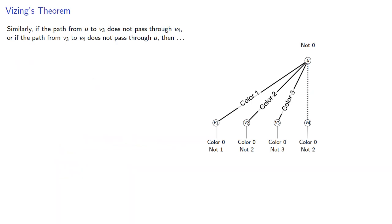Similarly, if the path from u to v3 does not pass through v4, or if the path from v3 to v4 does not pass through u, then that's a homework problem.